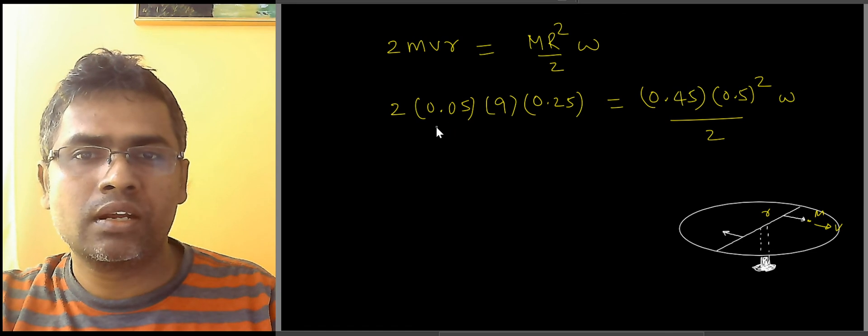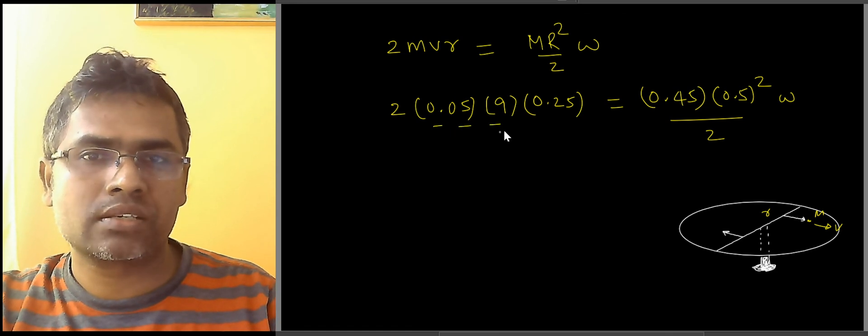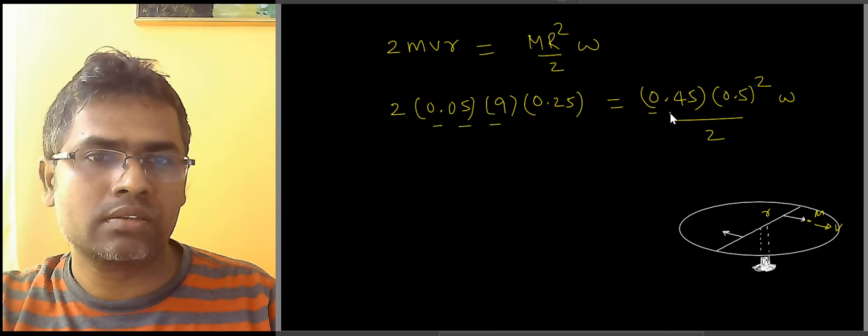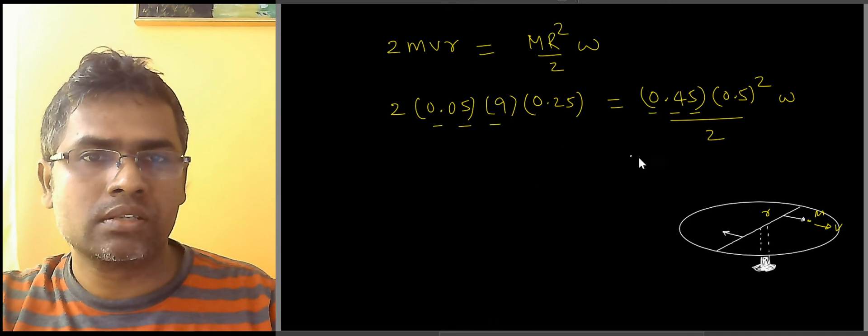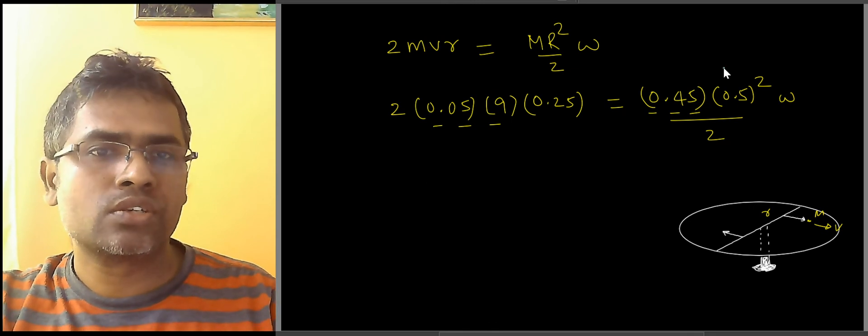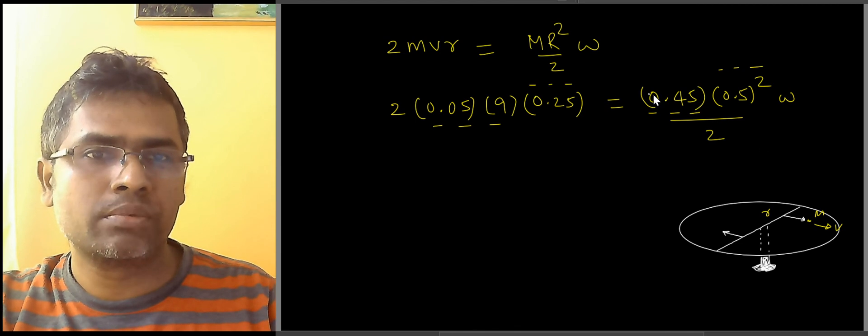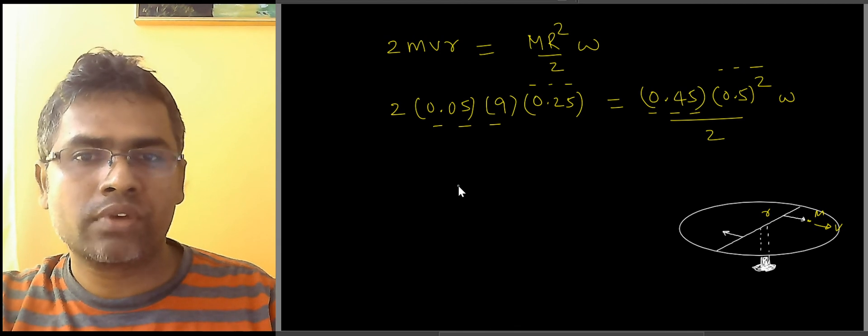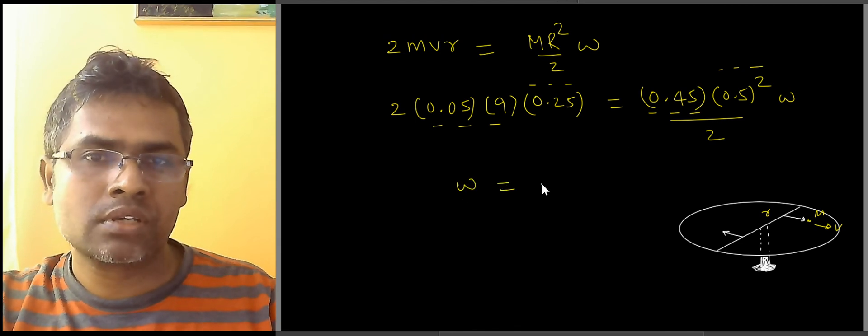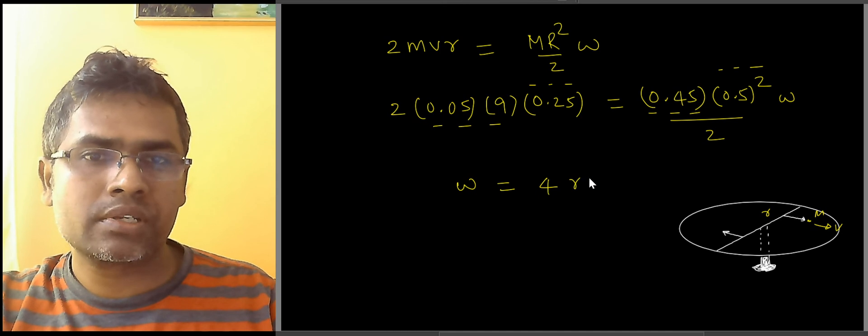If you see, let us say this 9 into 0.05 is actually 0.45, so I can eliminate the 0.45 on the other side and then 0.5 squared is actually 0.25, so you can eliminate that. All we are left with is omega, which is 4 radians per second.